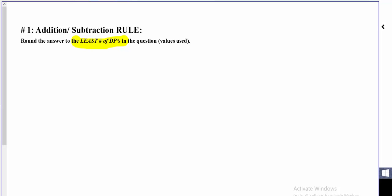In other words, the least number of decimal places in the question is what determines how many decimal places you can have in your answer. Let's do an example of that.